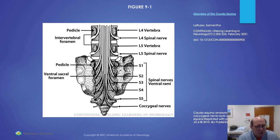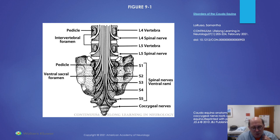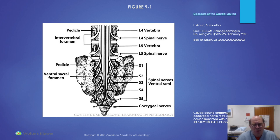This is a more direct view of the cauda equina area. You can see the different lumbar vertebrae — L4, L5 — the sacral vertebrae, and the coccygeal. In each one of these there are specific nerves that exit, but they're all together in that cauda equina. That is the area where injury can produce the syndrome.